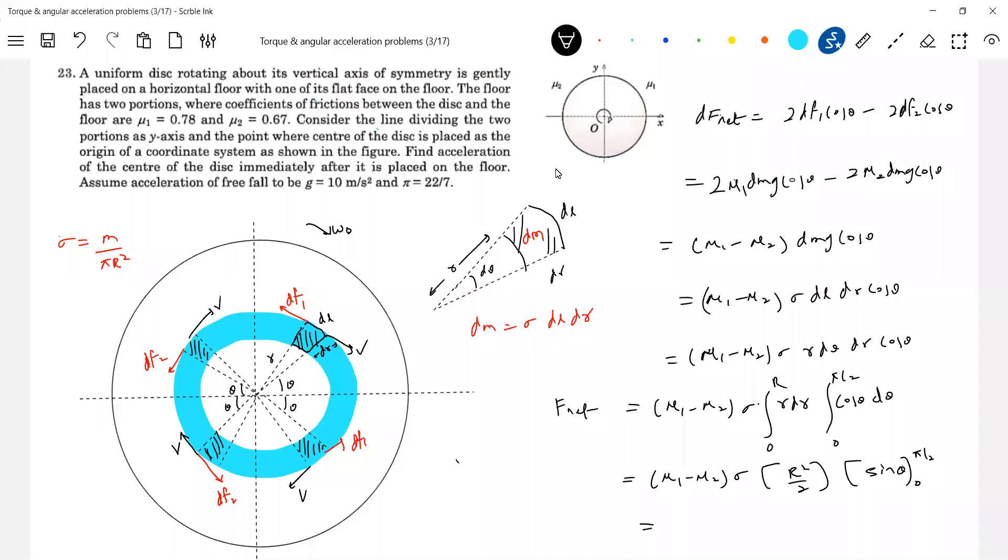Then simplification of this will be mu1 minus mu2 sigma. This will be r square by 2. Integral of cos theta will be sin theta, 0 to pi by 2. G, I think it got missed here. So substituting this, this sin theta will get eliminated. This will become 1. So finally sigma is pi r square by 2. So we will get the total acceleration. M is equal to mu1 minus mu2, G sigma is m by pi r square. That's what we assumed. So r square by 2. Solve it, you will get the acceleration.